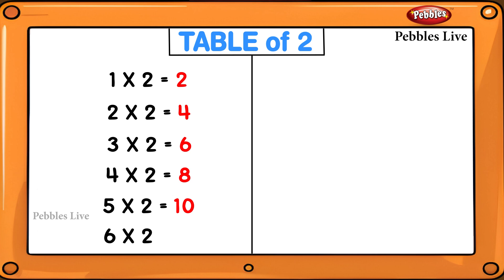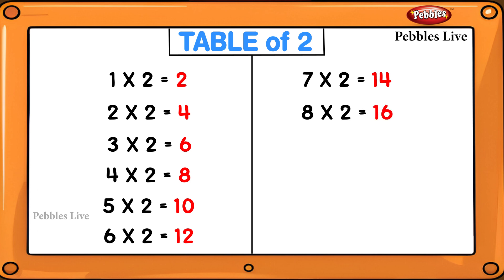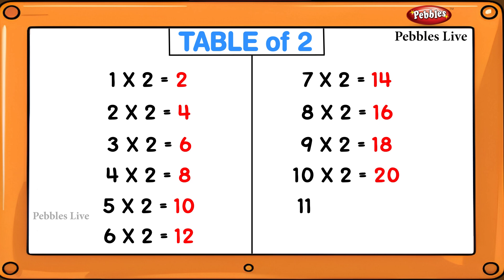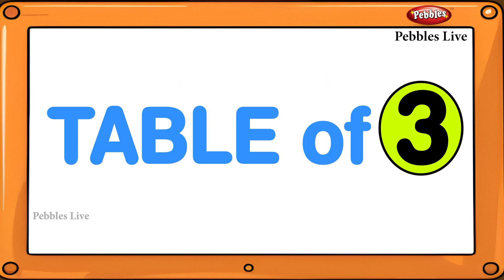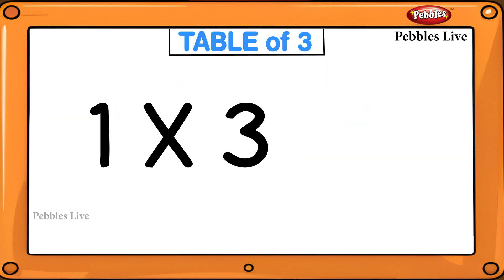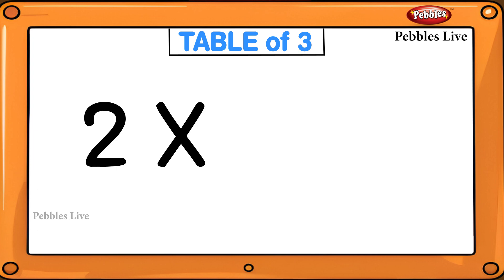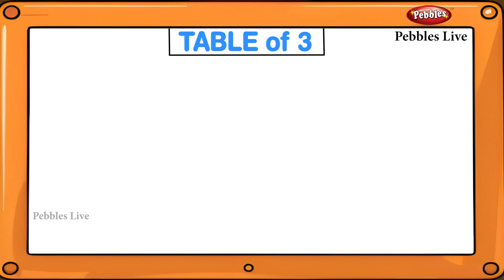6 twos are 12, 7 twos are 14, 8 twos are 16, 9 twos are 18, 10 twos are 20, 11 twos are 22, 12 twos are 24. Table of 3: 1 threes are 3, 2 threes are 6, 3 threes are 9, 4 threes are 12, 5 threes are 15.